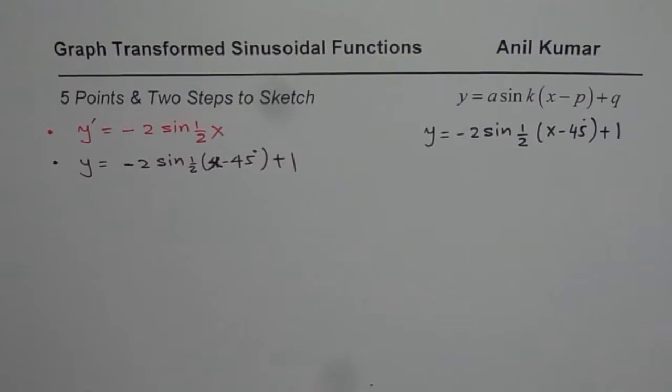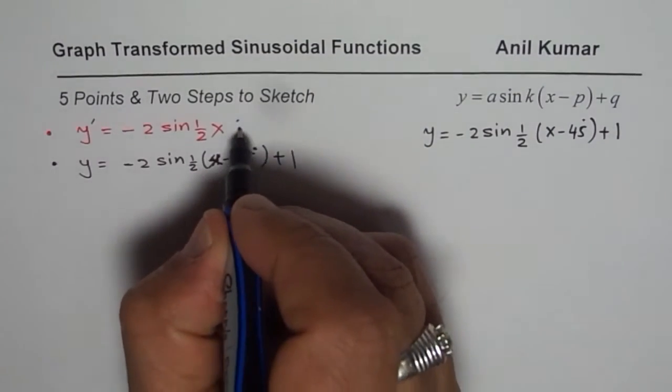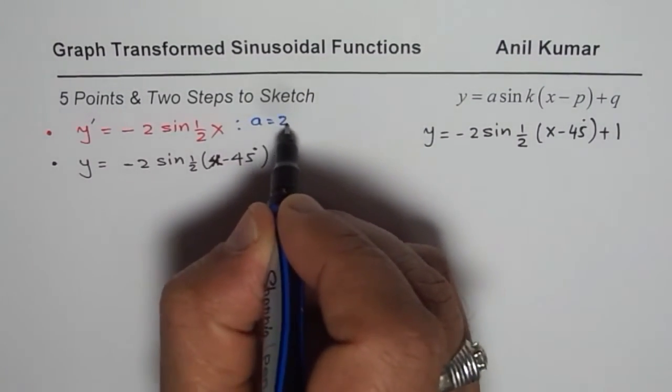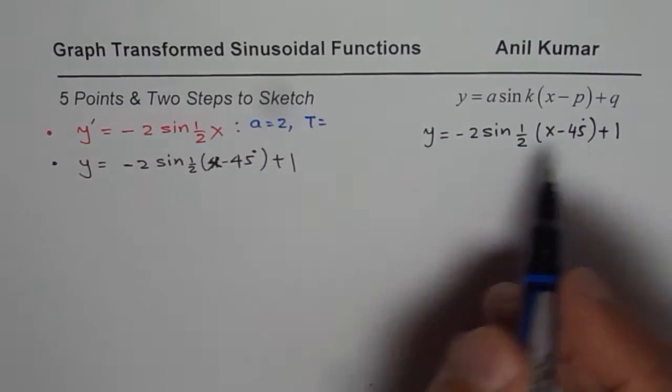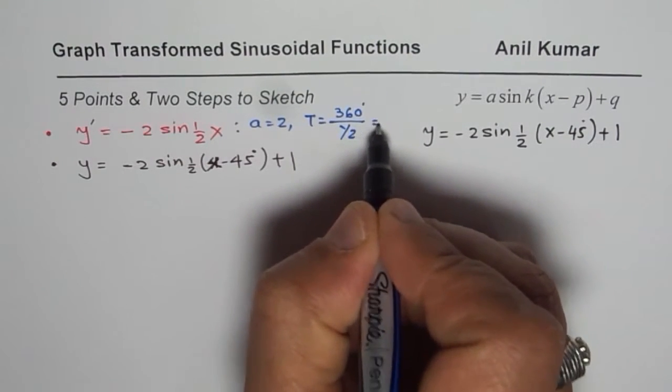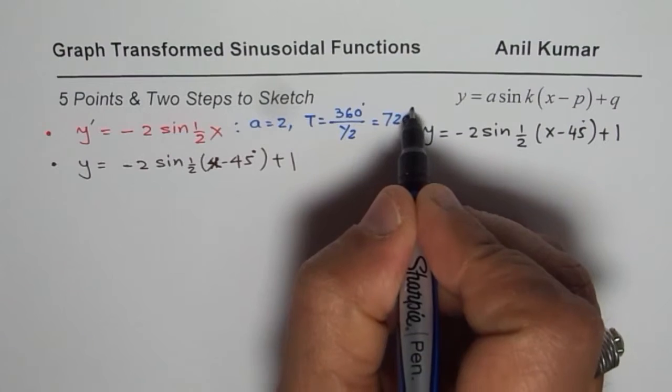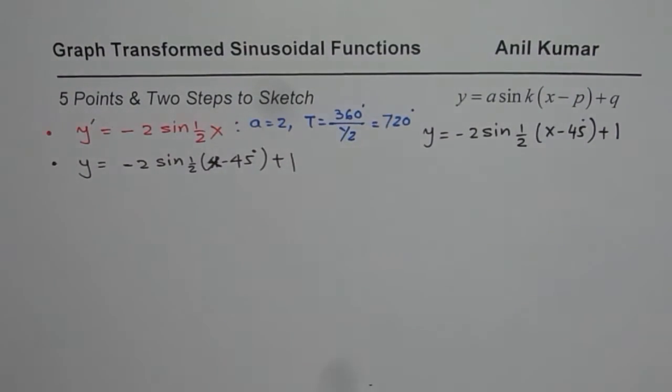Let's try to see how to sketch the first part, which is reflection on x-axis, vertical stretch by 2, horizontally stretched by a factor of 2. We have amplitude of 2, and time period T will be, since this is in degrees, 360 degrees divided by half, which is 720 degrees.